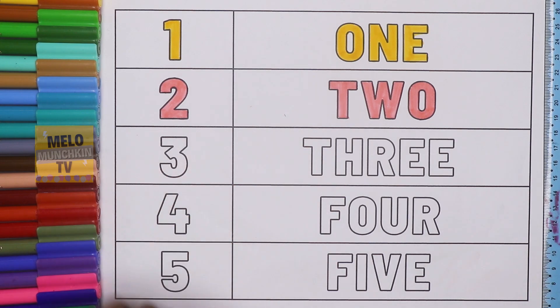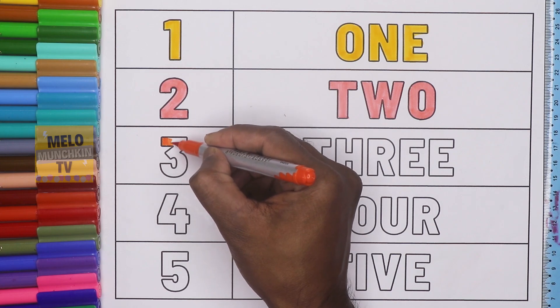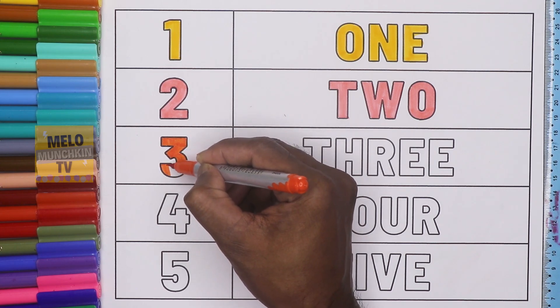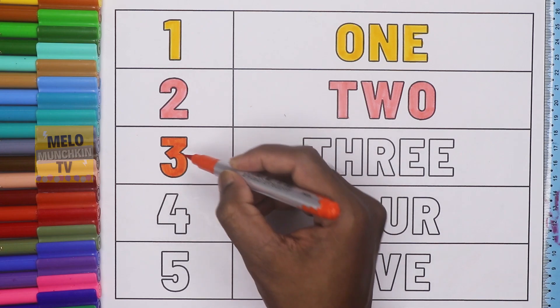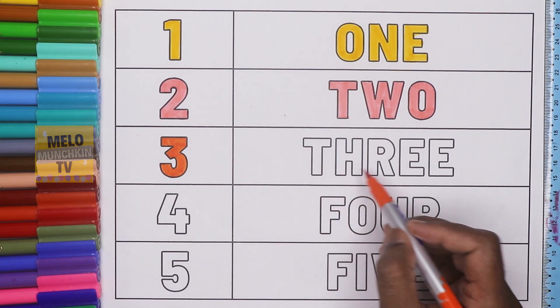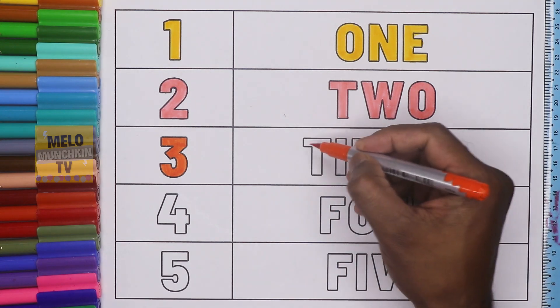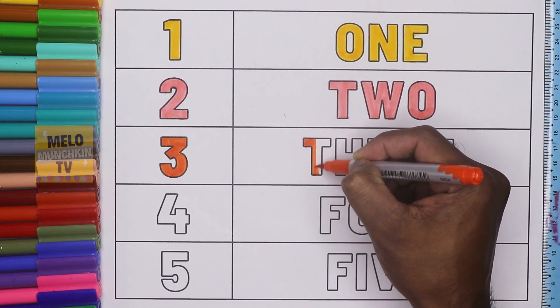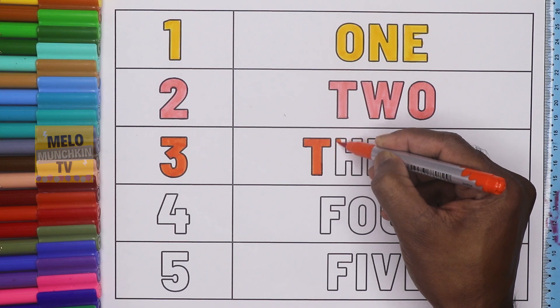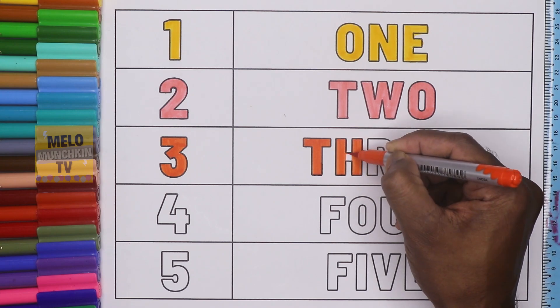Now I'll use orange color to color number 3. This is number 3 and the spelling is T-H-R-E-E, 3. Okay, let's color T-H-R-E-E.